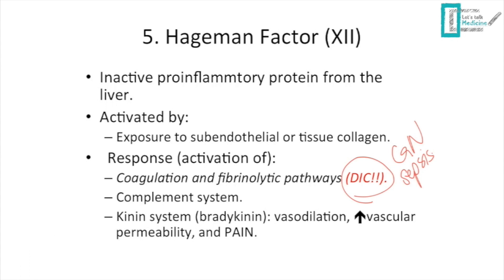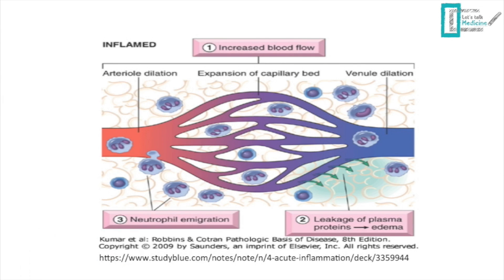Hageman factor activates the coagulation and fibrinolytic pathways (potentially leading to DIC), the complement system, and the kinin system. In the kinin system, it produces bradykinin, which is responsible for pain — alongside prostaglandin E2. Bradykinin also causes vasodilation and increased vascular permeability.